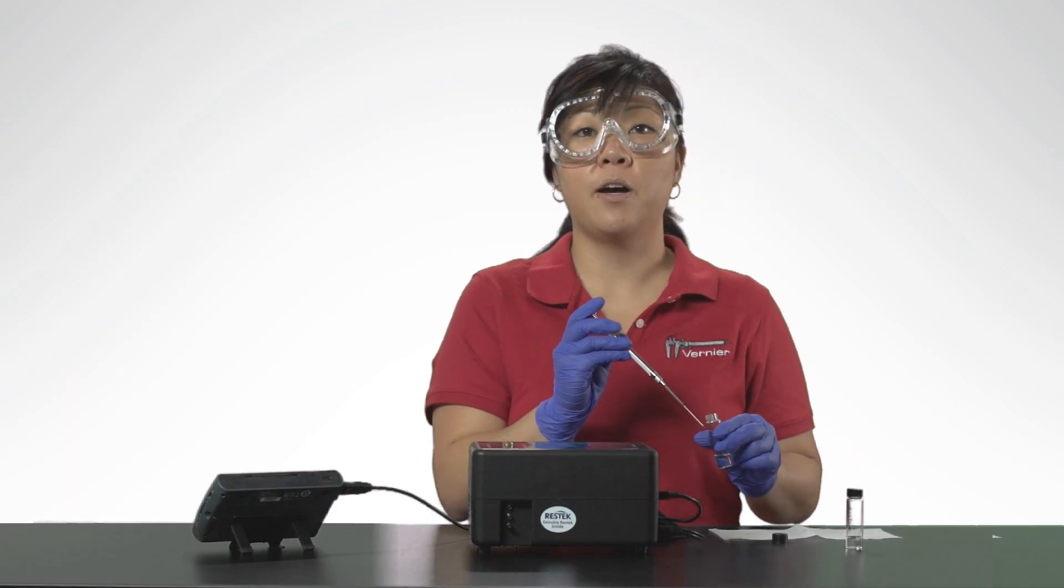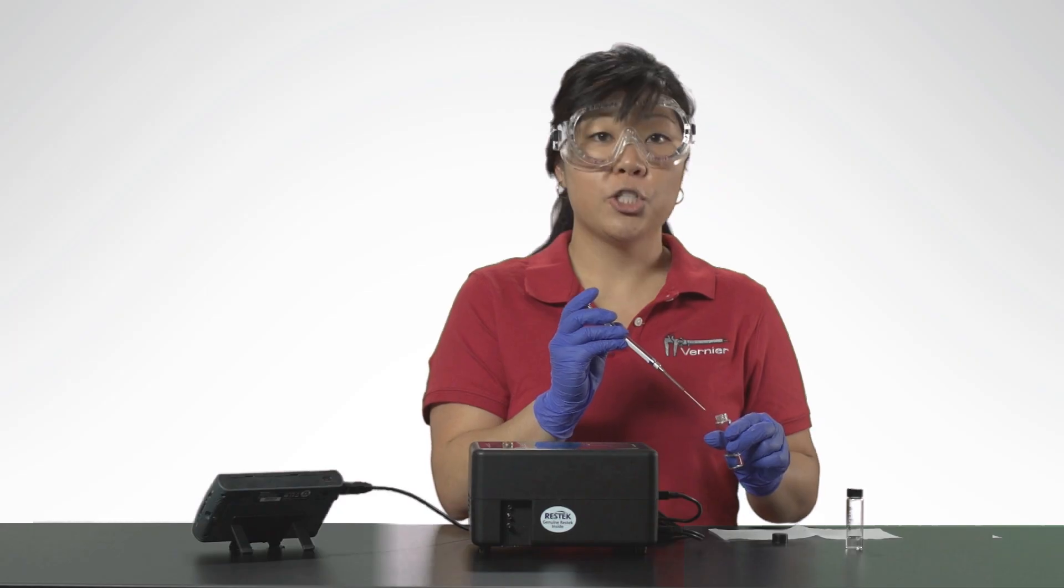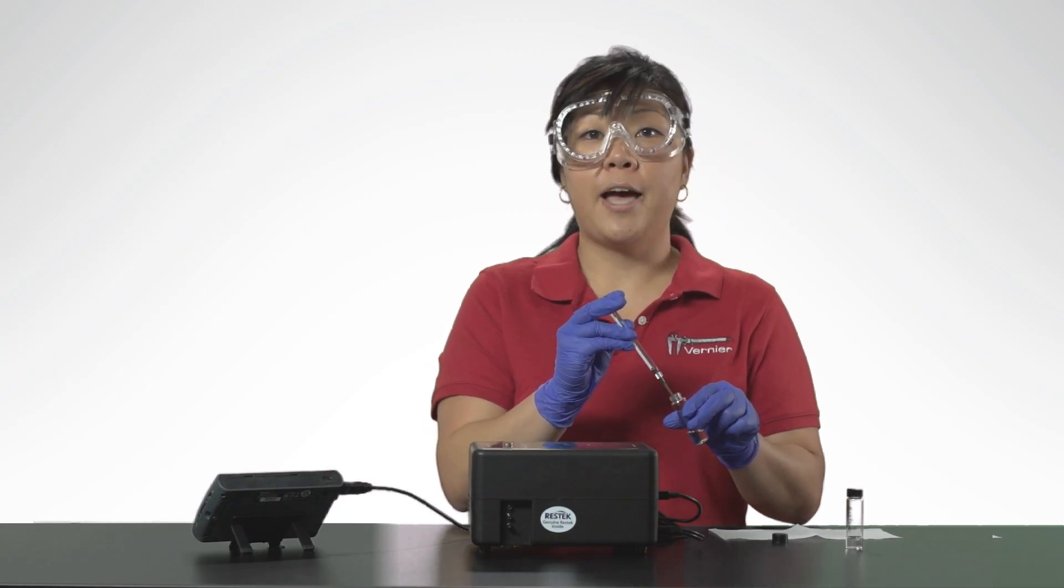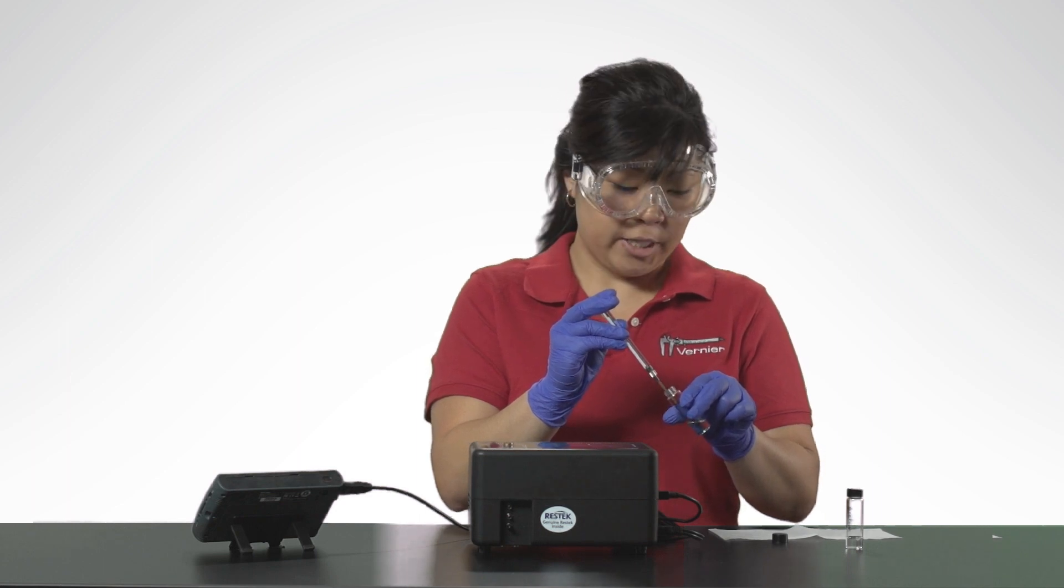Then collect the volume of the sample for injection. Submerge the needle into the vial containing your sample. Pull your plunger back approximately 0.2 microliters of liquid.